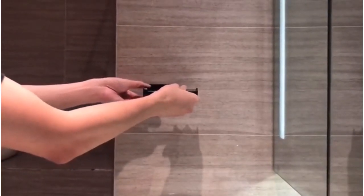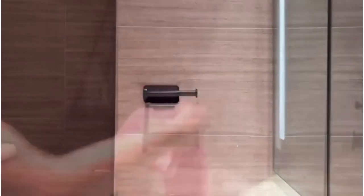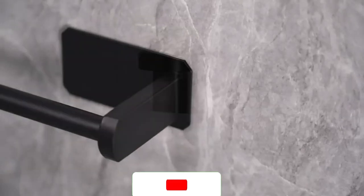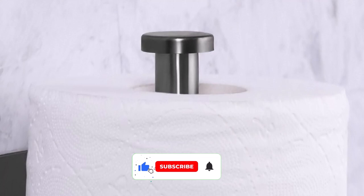This toilet paper holder is made of stainless steel, so I believe it won't rust even if exposed to moisture. When it gets dirty, a simple wipe from a damp cloth will do the work easily.